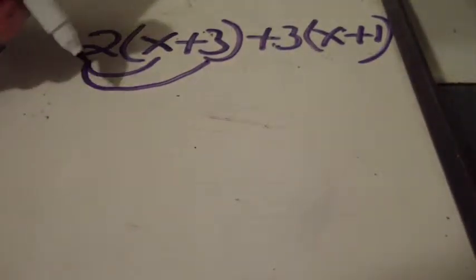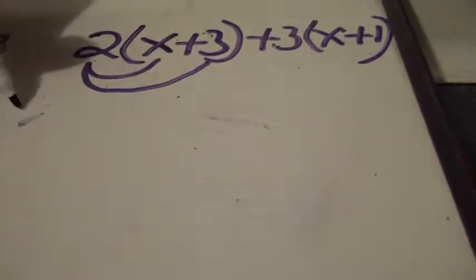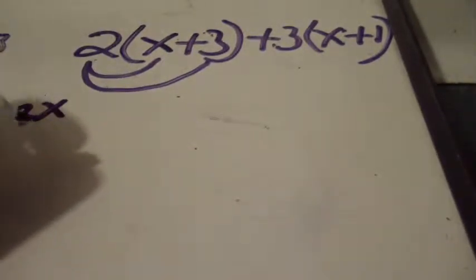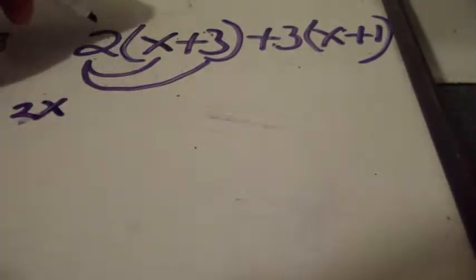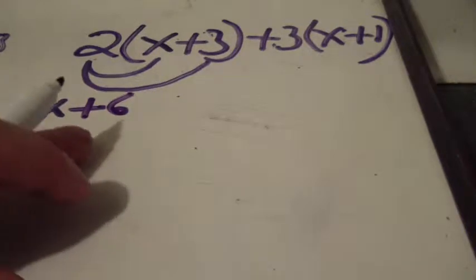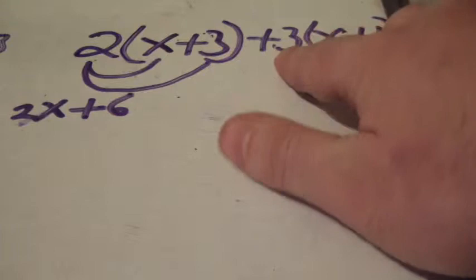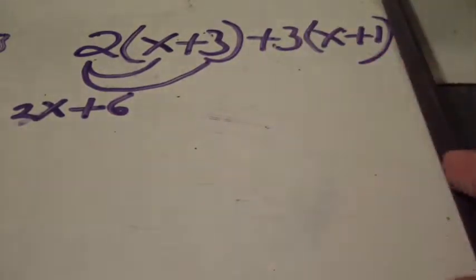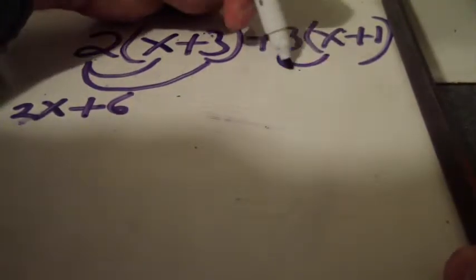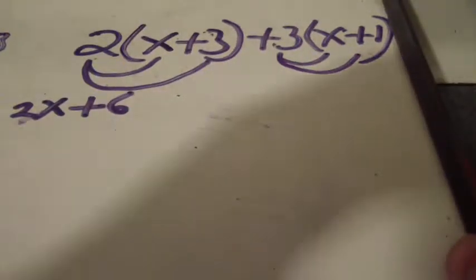So we simply do this. We multiply 2 times x and we multiply 2 times 3. So 2 times x is simply 2x. 2 times a plus 3 is simply a 6. So we took care of that. Now the next step is to take care of this. So we do the same thing. We have to distribute that 3. 3 times x is 3x.